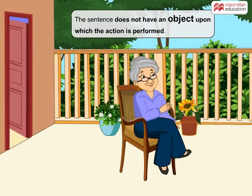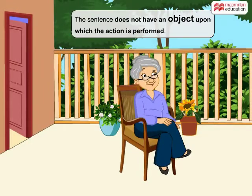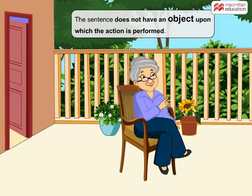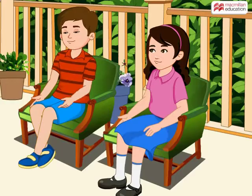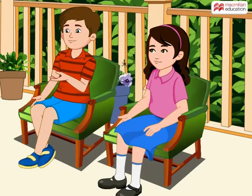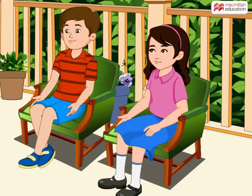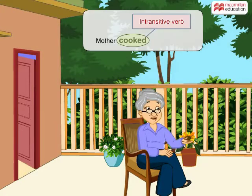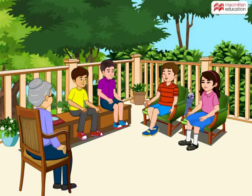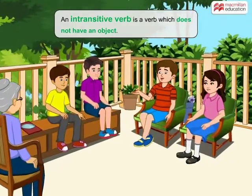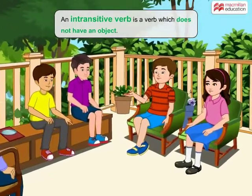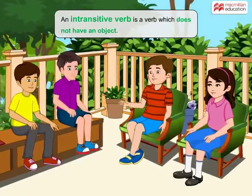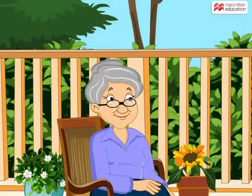Therefore, the sentence does not have an object upon which the action is performed. Oh, that's what is meant by an object. Therefore, cooked here is an intransitive verb. So, an intransitive verb is a verb which does not have an object.